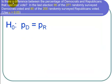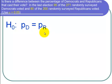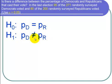We want to find out if there is a difference between the percentages of Democrats and Republicans who voted. So I let H0 be P sub D, the proportion of Democrats who voted, equal P sub R, the proportion of Republicans who voted. For H1, I let P sub D not equal to P sub R, because we want to find out if there is a difference — not whether Democrats had more or fewer voters, just whether there is a difference — so we have not equal to.